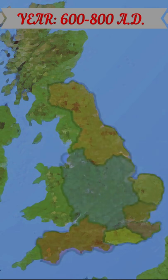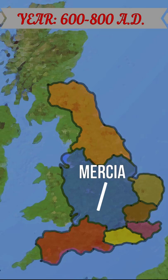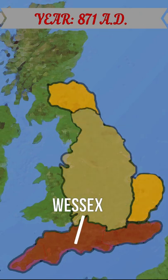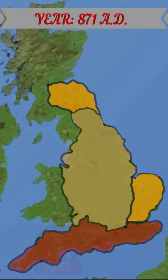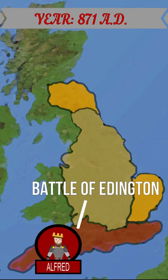By the year 600, seven Anglo-Saxon kingdoms formed throughout the region, known as the Heptarchy, the most powerful of which was the Kingdom of Mercia. Viking invasions in the 8th century led to every kingdom falling except for Wessex. The Vikings nearly conquered Wessex, but King Alfred the Great managed to save his kingdom at the Battle of Eddington.